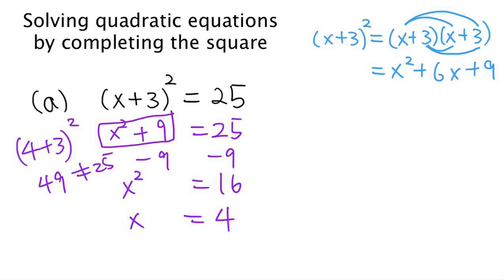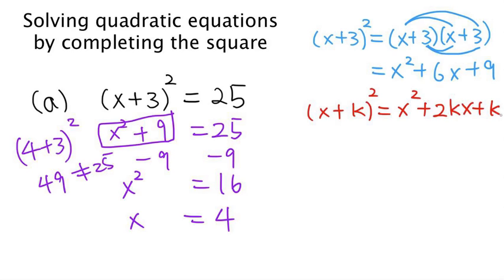More generally, we have this formula: x plus a number k, squared, equals x squared plus twice of kx plus k squared. In this example, the value of k equals 3, so 2k equals 6, and k squared equals 9.